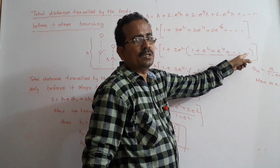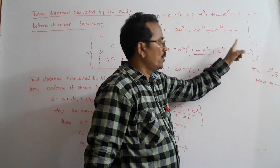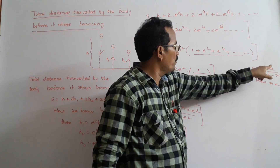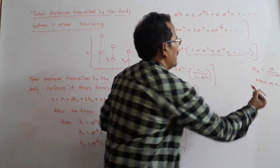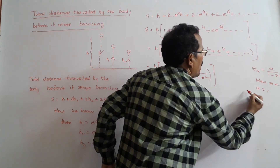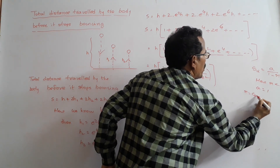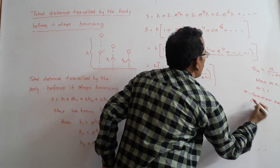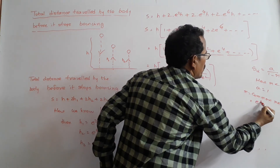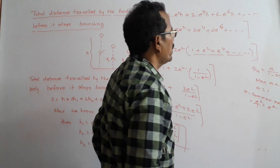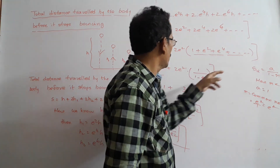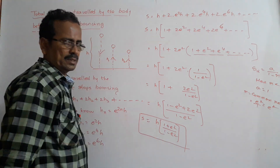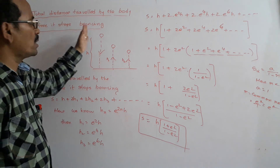The series is a geometric progression. The sum of infinite terms is S infinity equals A divided by 1 minus R. The first term A equals 1, and the common ratio R equals E squared by 1, which is E squared. Applying this formula gives the total distance S equals H times 1 plus E squared divided by 1 minus E squared. This is the total distance traveled by the body before it stops bouncing.